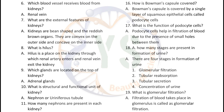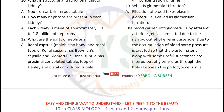How many stages are present in the formation of urine? There are four stages in the formation of urine: glomerular filtration, tubular reabsorption, tubular secretion, and concentration of urine.